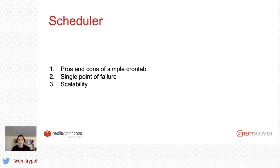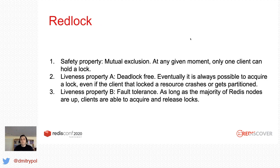If our jobs are idempotent — say, generating reports — we could just run two schedulers and do everything twice. But some tasks are more critical. For example, if we're running a billing process charging users a monthly subscription fee, we don't want to run those jobs twice or we'll have lots of unhappy users. And we also don't want those jobs not to run at all, or we'll have lots of unhappy business executives.